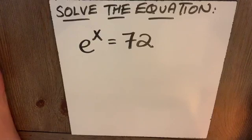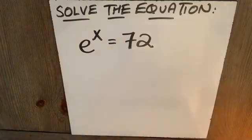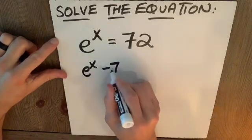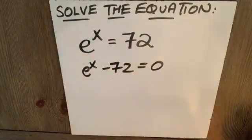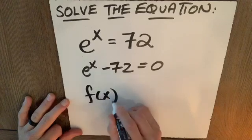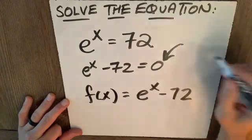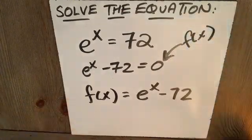If I say to you, solve this equation on a calculator, the first thing I would do is I would write this as e to the x minus 72 equals 0. Essentially, what I've done is I've subtracted 72 from both sides. Now, I'll write this as a function. f of x equals e to the x minus 72. Notice where there was a 0, I put f of x or y.